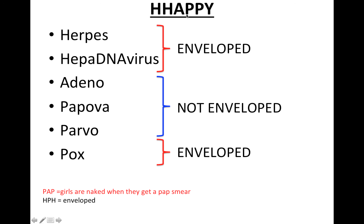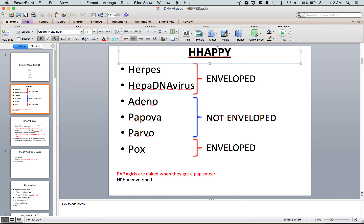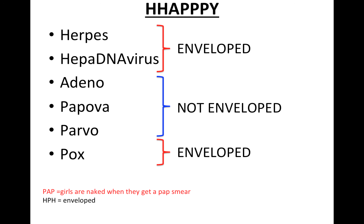Here's the mnemonic we're going to use to help recognize DNA viruses — think 'HAPPY,' with two H's and three P's: Herpes, Hepatinavirus, Adenovirus, Papovavirus, Parvovirus, and Poxvirus.